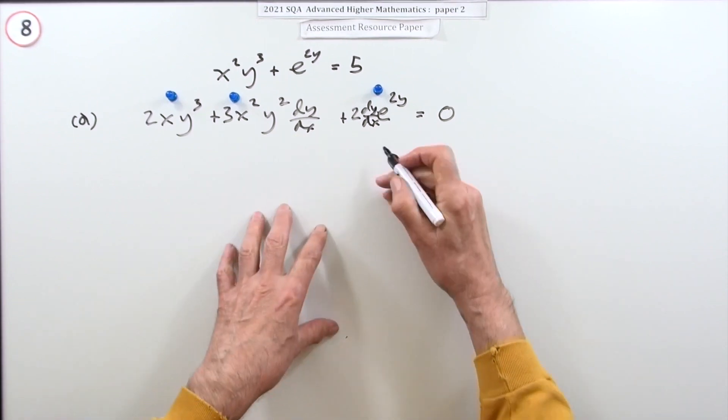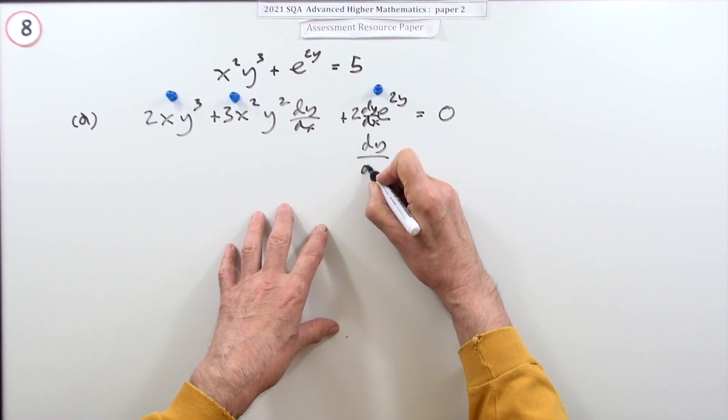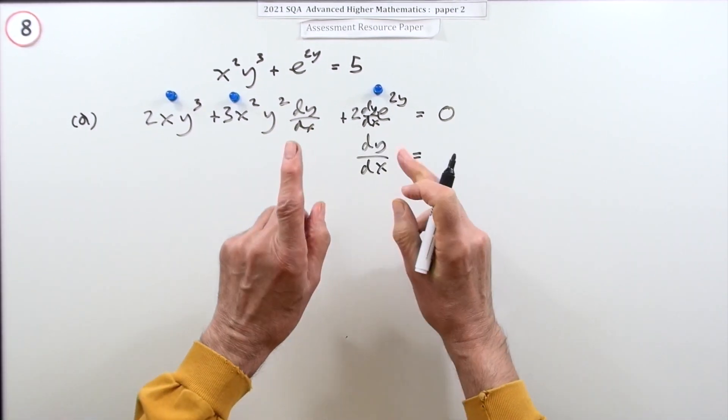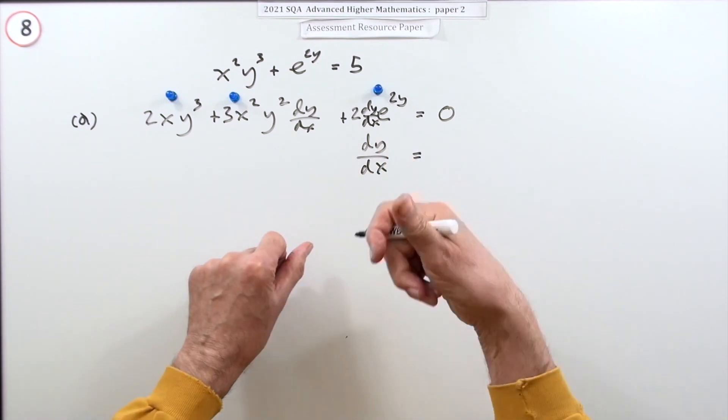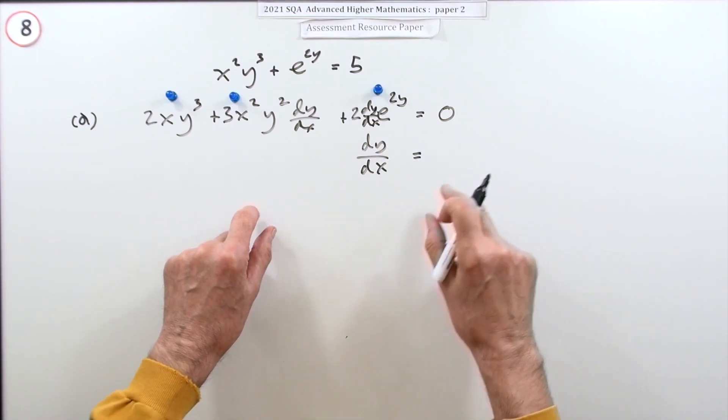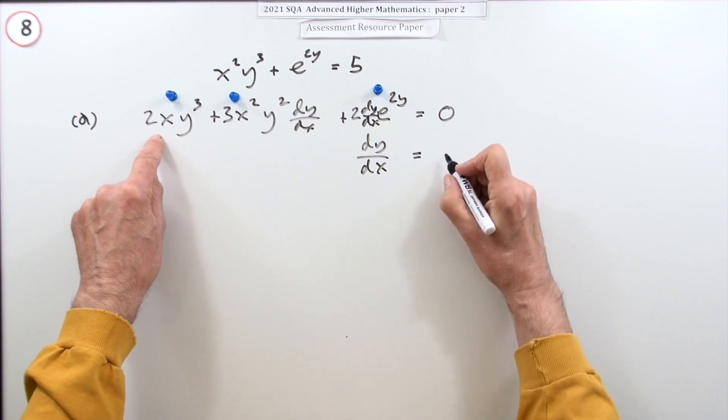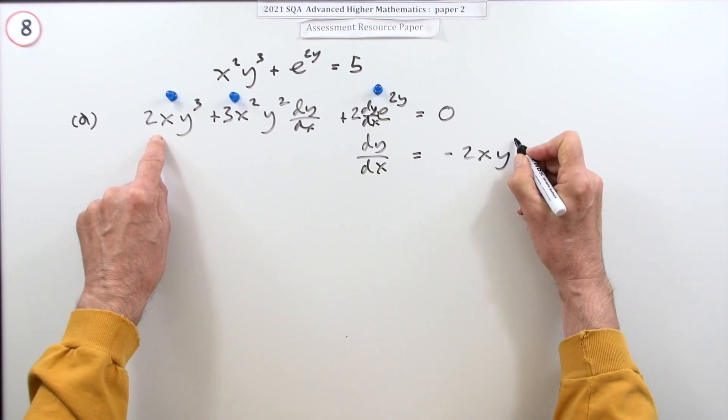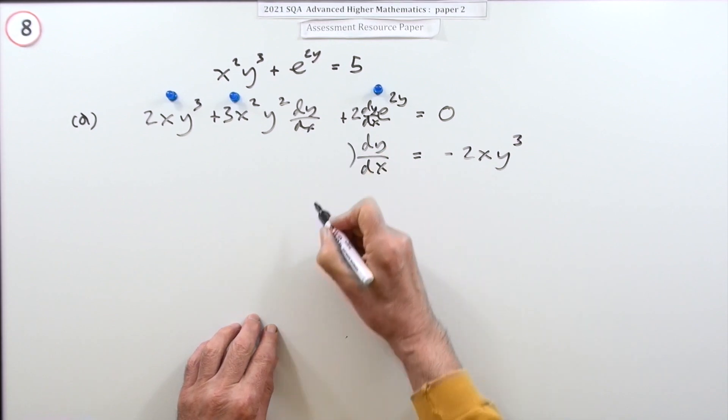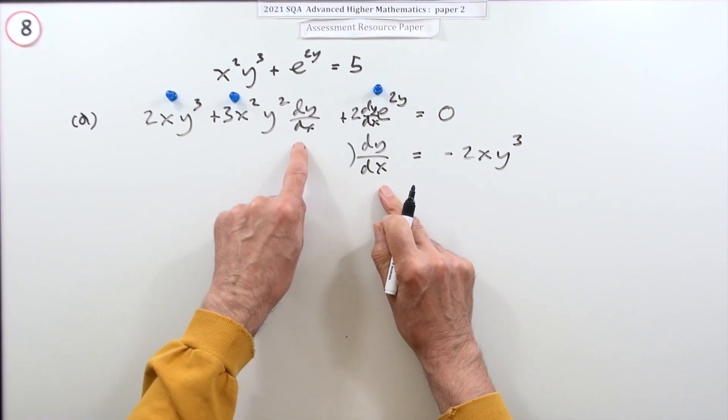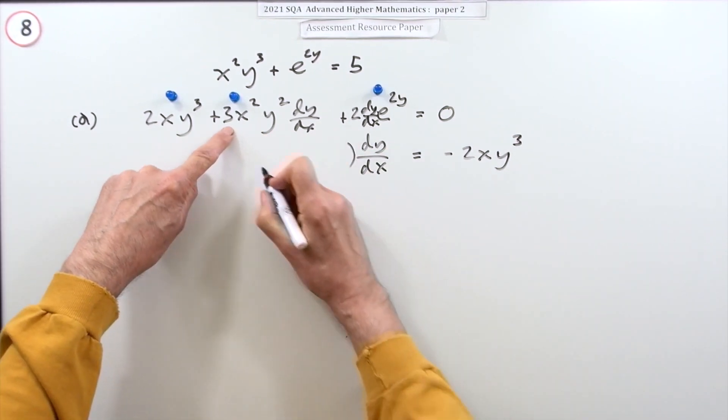Anything that doesn't say dy/dx, just throw it to the other side. So that goes over the other side, minus 2xy³.